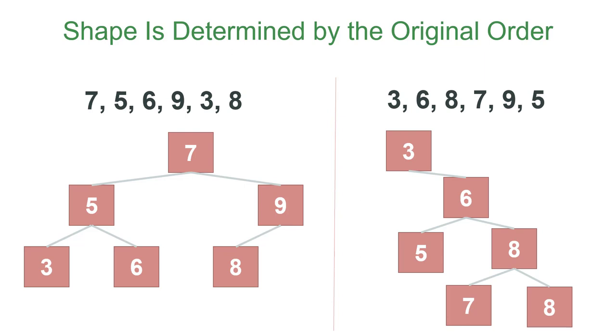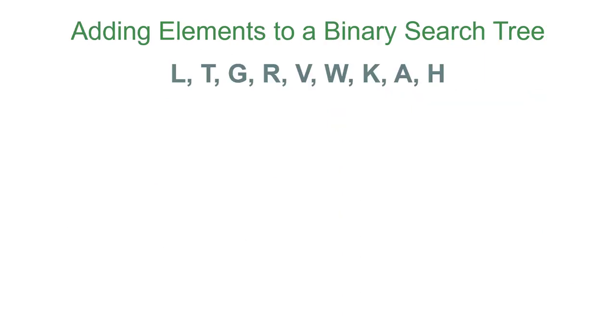So let's see another example. Here we're adding L, T, G, R, V, W, K, A, H to a binary search tree. The root will always be the first element, which in this case is L.